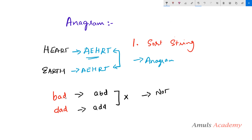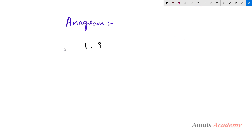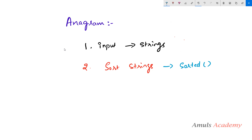So to find out whether two strings are anagram or not, first we need to sort the strings, then we need to compare them. In our program we need to do three steps: the first step is to take input from the user — two strings. The second step is to sort the given strings, and the last step is to compare the sorted strings. When the sorted strings are equal, the given strings are anagrams; if not, they are not anagrams.